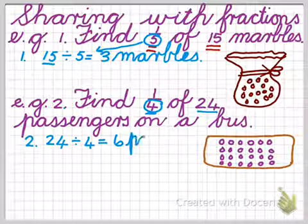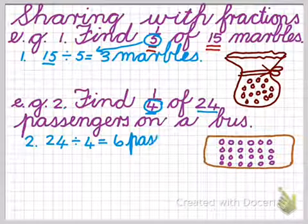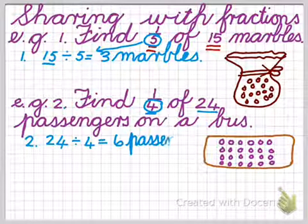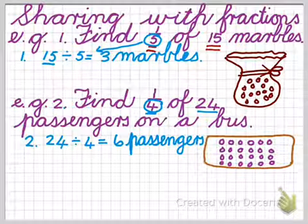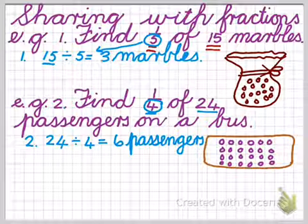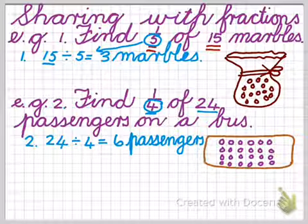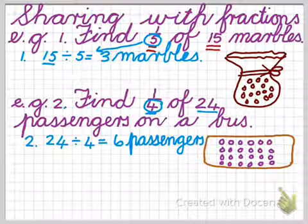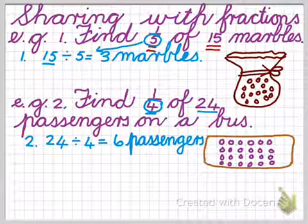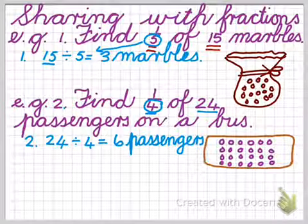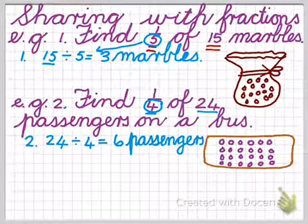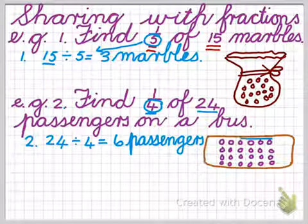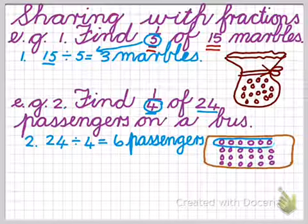So let's just write passengers. So then we know that it's six passengers we're talking about. And then we have answered our question, which was to find one quarter of 24 passengers on a bus. So we shared the passengers into four pieces and we got six. If you look at my diagram, we could have actually checked it like that.